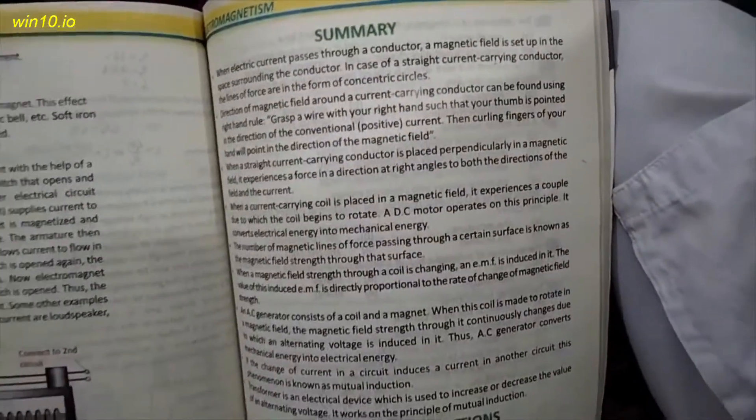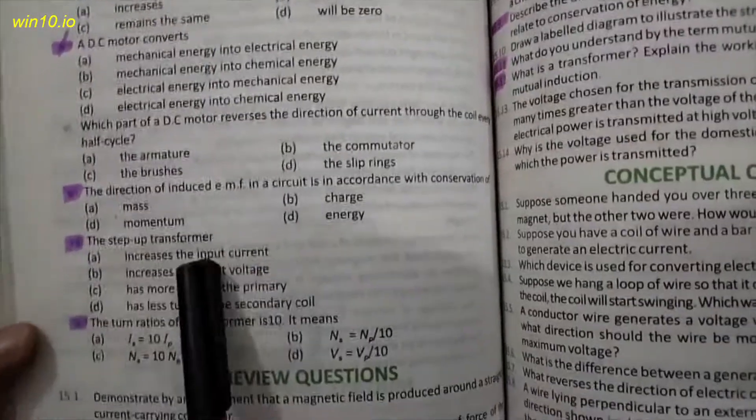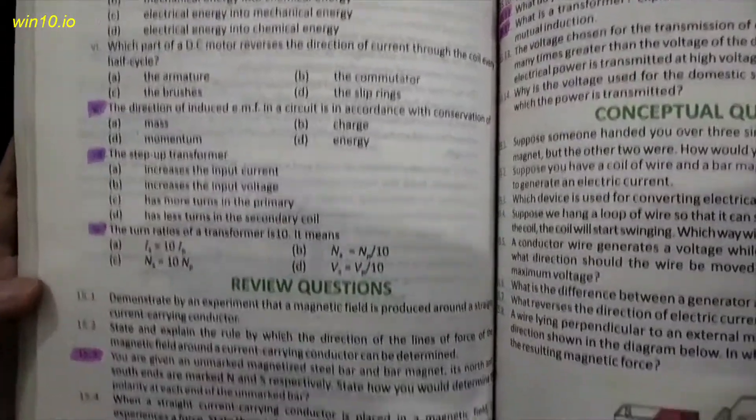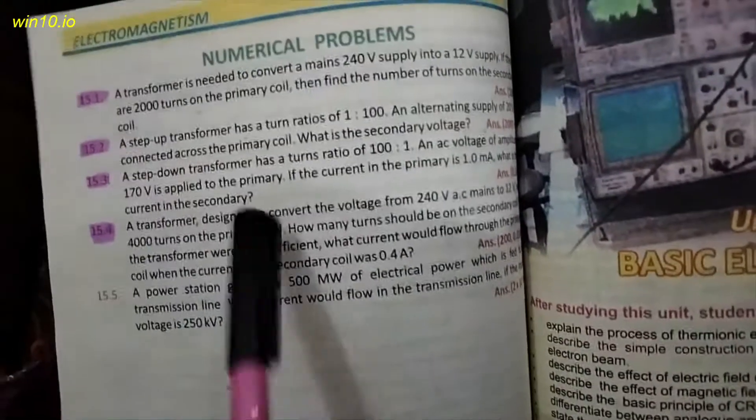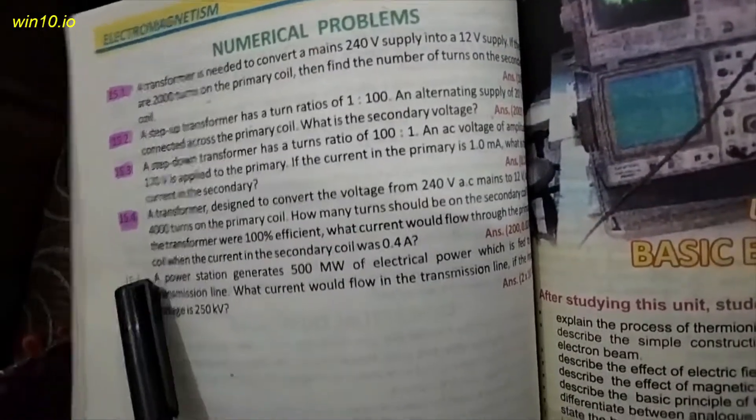Page number 133 and 134, these two topics skip. Next MCQs 1, 2, 3, 4, 7, 8, 9. Review question 15.3, 15.7, 9, 11, 12. Numericals 15.1, 2, 3, and 4.